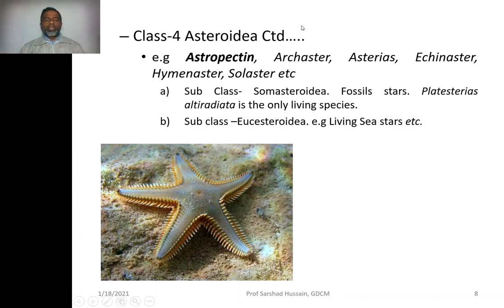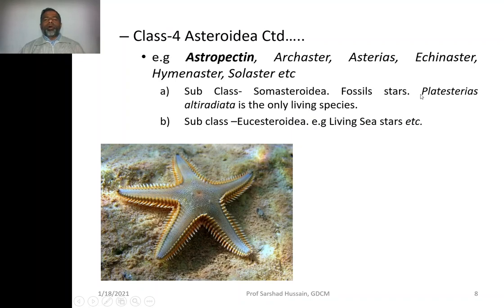Asteroidia has two subclasses: Somasteroidia and Euasteroidia. Somasteroidia are called fossil stars — Platasterias is the only living species, representing the earlier ancestral form. Euasteroidia have the living stars.